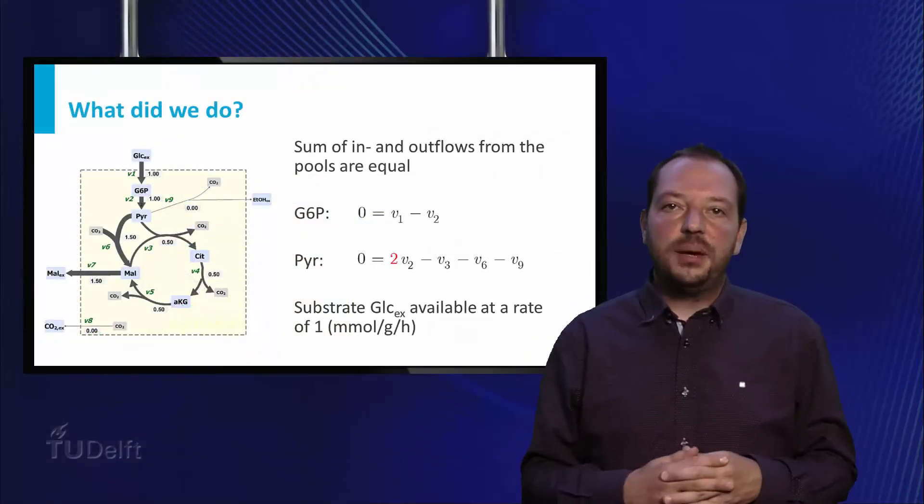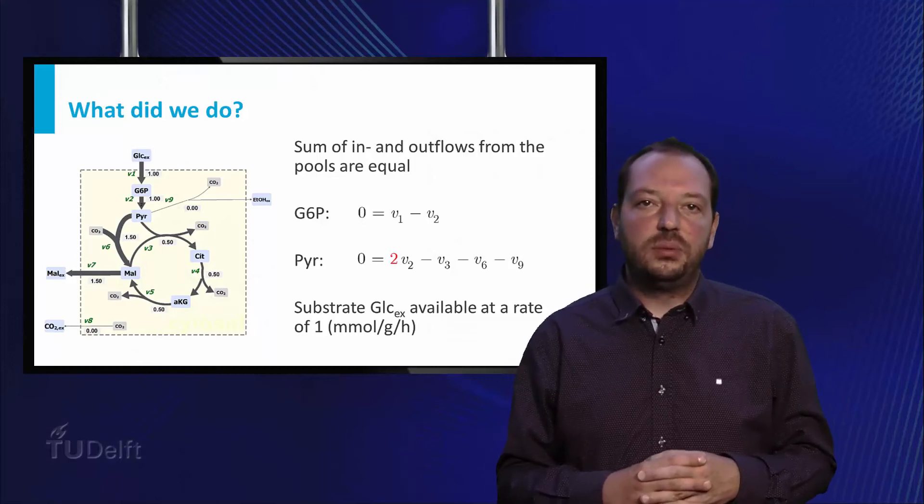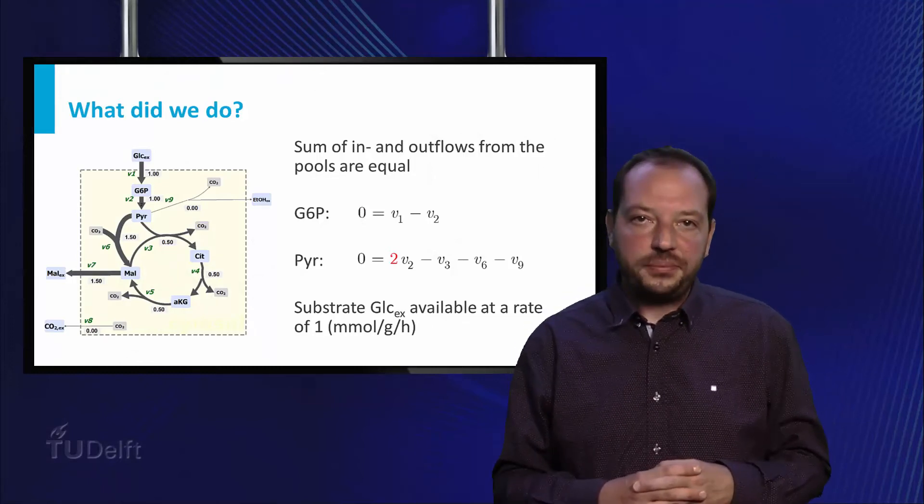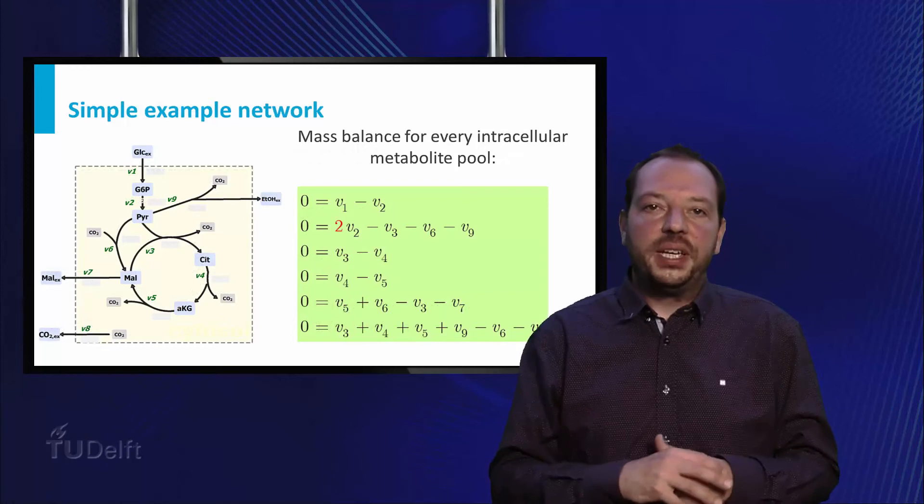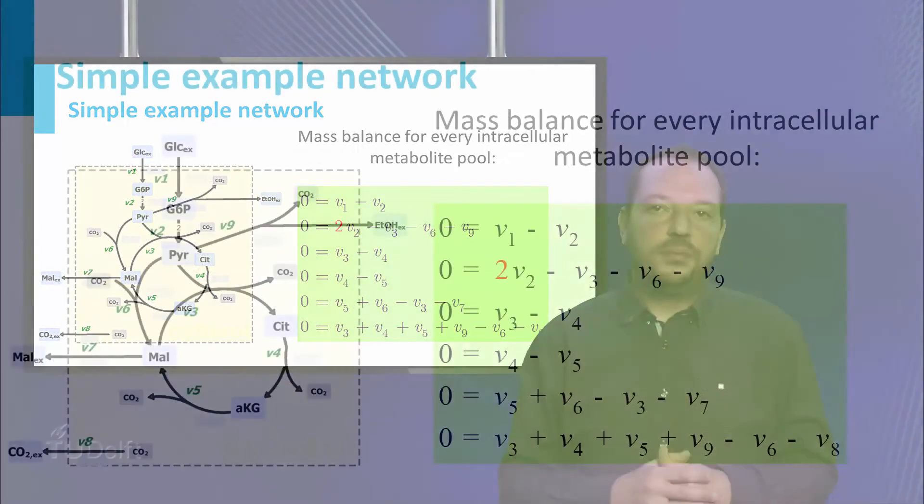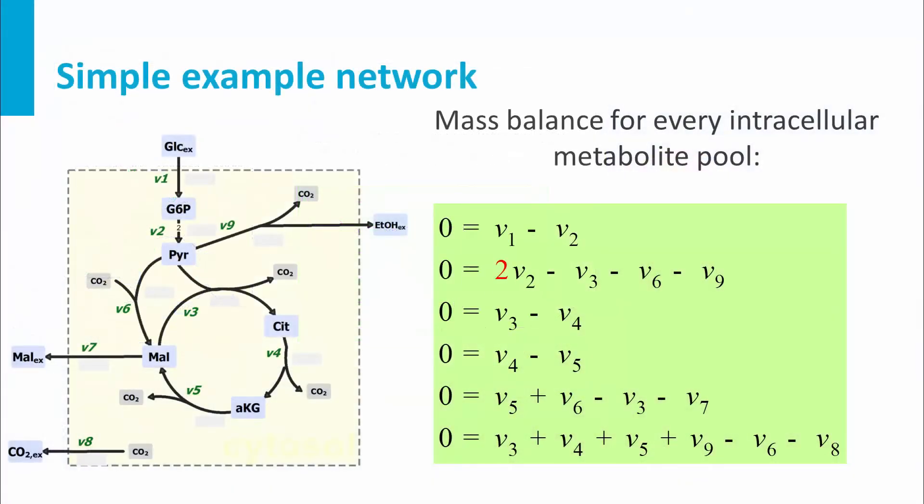Furthermore, we have defined that the uptake reaction has a flux of 1 mmol per gram per hour. In this network we can derive a total of 6 flux relations for the 6 intracellular metabolites as shown on the slide.